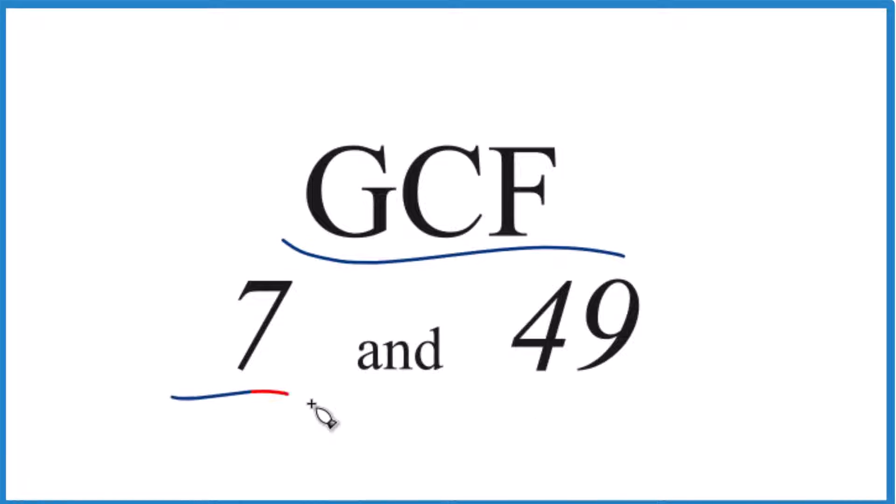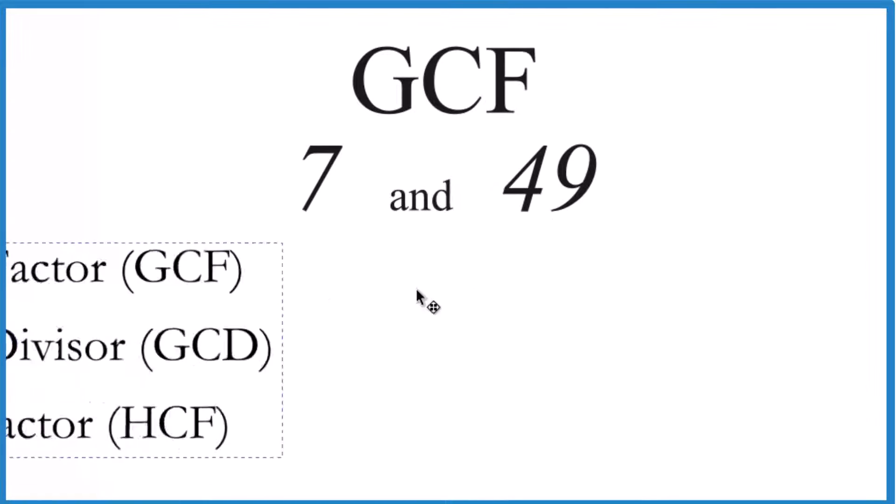Let's find the GCF for 7 and 49. The GCF is the greatest common factor for 7 and 49.